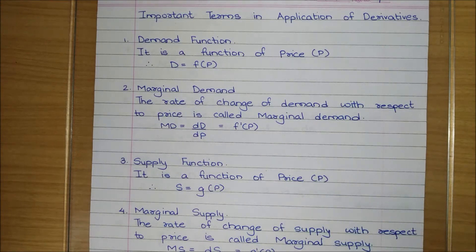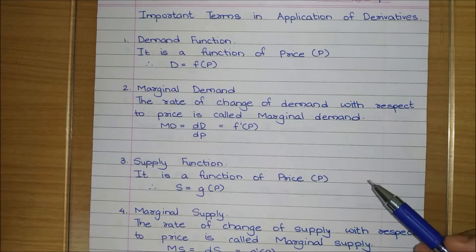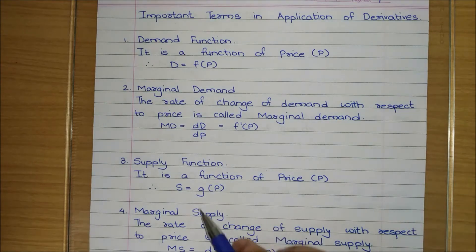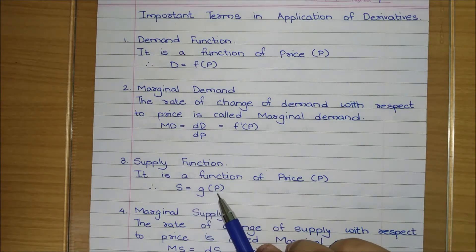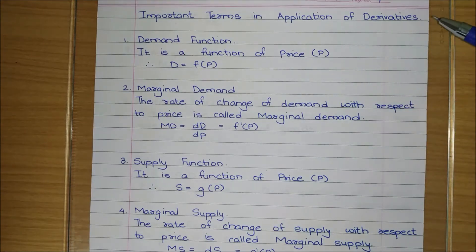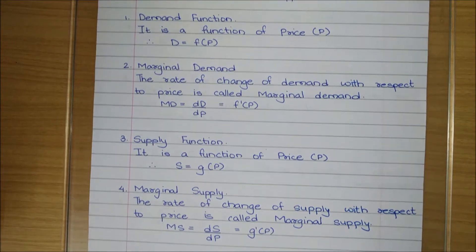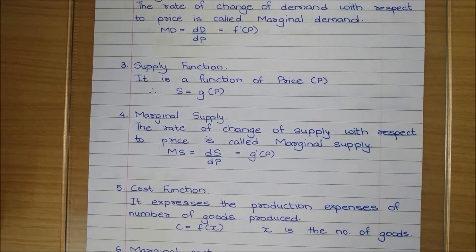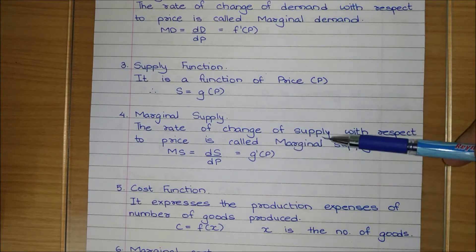Next, the supply function is also a function of price — it tells us how much quantity of a commodity is coming into the market. A manufacturer looks at whether a commodity is selling well and getting a good price; if so, they supply more. If the price is low, they may not supply much. So supply is from the manufacturer or producer point of view, and marginal supply is the rate of change of supply with respect to price.